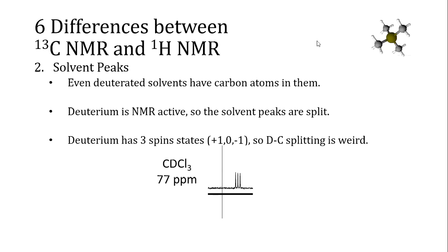Because deuterium has three spin states — plus one, zero, and minus one — where hydrogen only has two spin states (up and down), things are split into threes instead of twos, and the overall splitting patterns can get complicated quickly. But the deuterium-oriented splitting is different than anything you might see anywhere else in the spectrum, so it's easy to identify the solvent peaks when you see them.